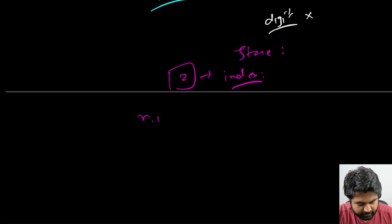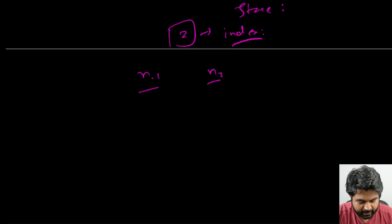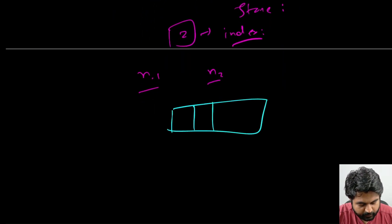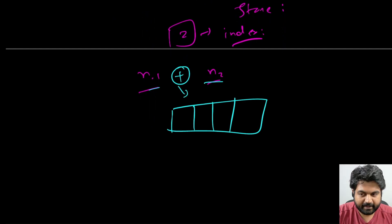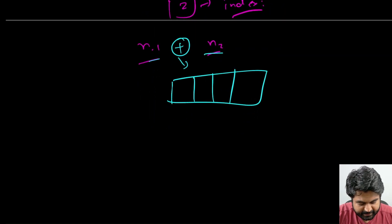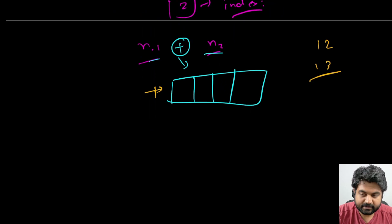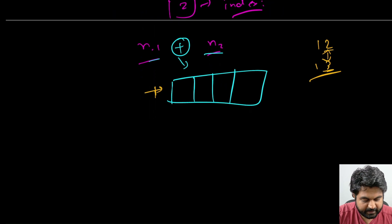Coming back to the computer-based solution: given nums1 and nums2, we are going to store the results in an array. The maximum length of this array can only be the combined length of the digits of nums1 and nums2. So we generate an array of that size to store the result, and then we do the operation of storing the result for every single multiplication.